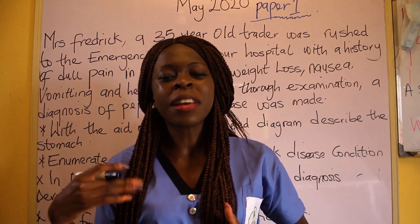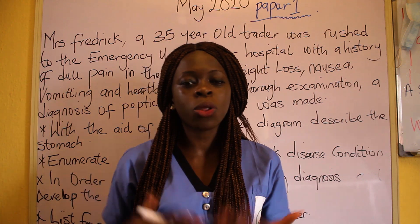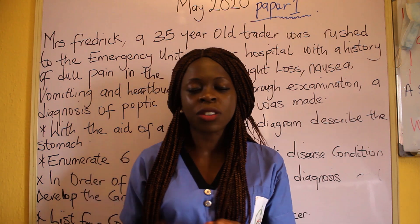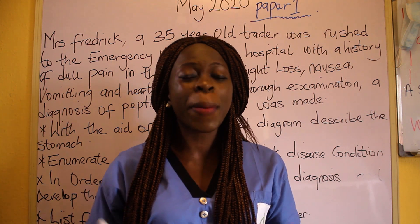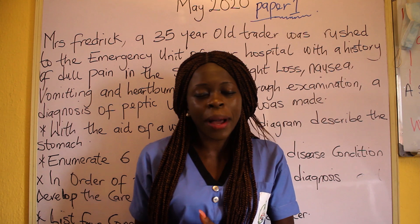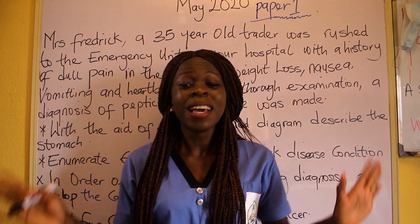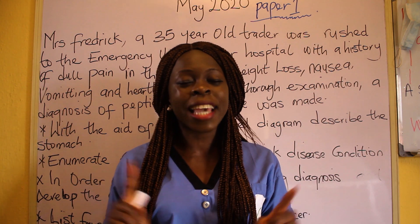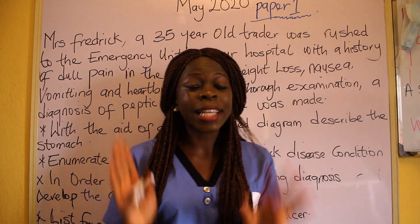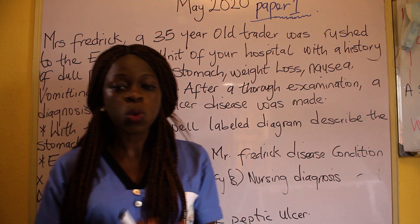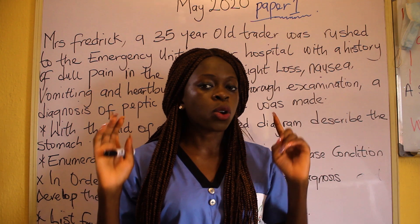I've been getting a lot of questions: how do I tackle Nossi Cancel questions? What is the difference between define, enumerate, describe, explain? How do I go about it when it comes to an examination condition? By the end of this class, you'll be able to get all the clues you need. We'll be taking an example using a May 2020 paper 1, question 1 to tackle those questions.